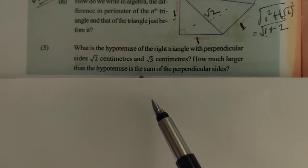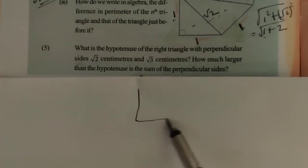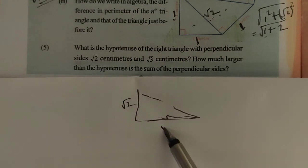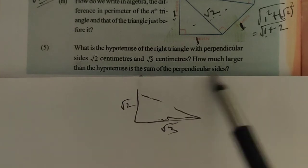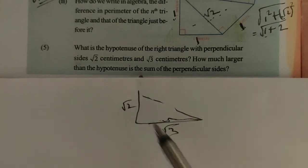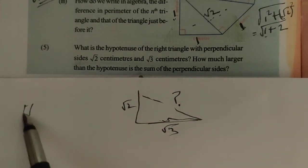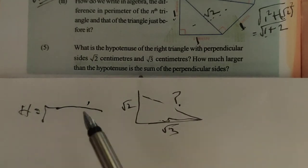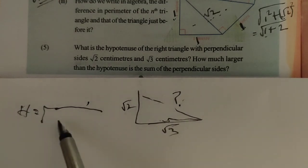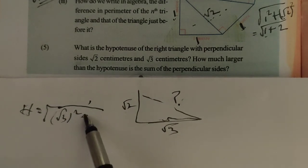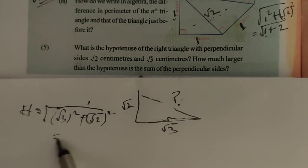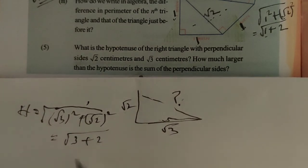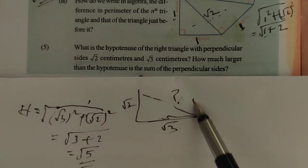What is the hypotenuse of a right triangle with perpendicular sides root 2 centimeters and root 3 centimeters? By the Pythagorean theorem, the hypotenuse squared equals root 3 squared plus root 2 squared, that is 3 plus 2 equals 5. So the hypotenuse is root 5.